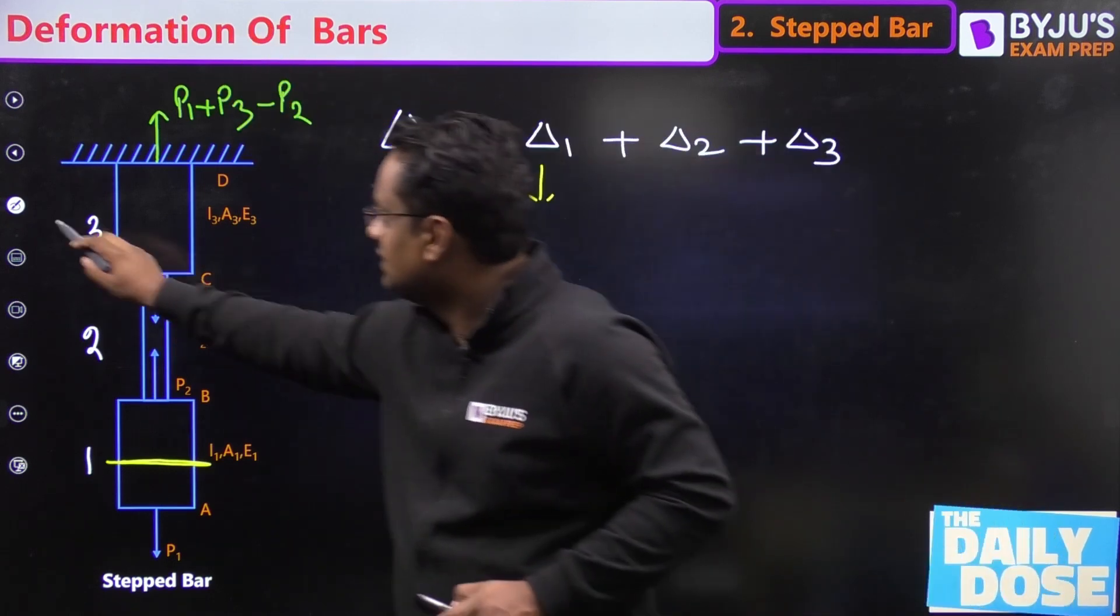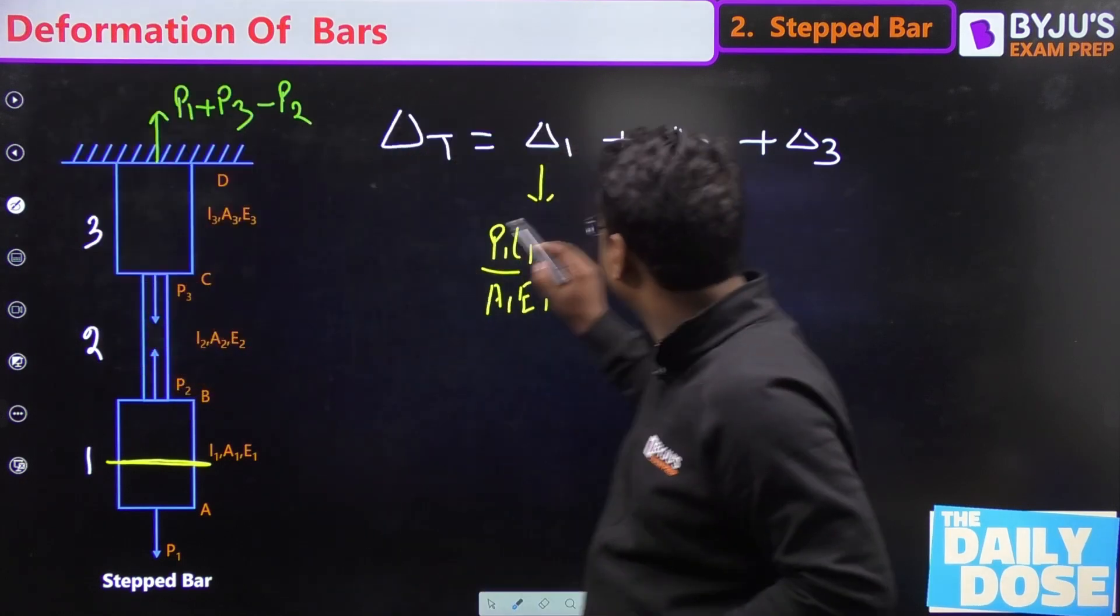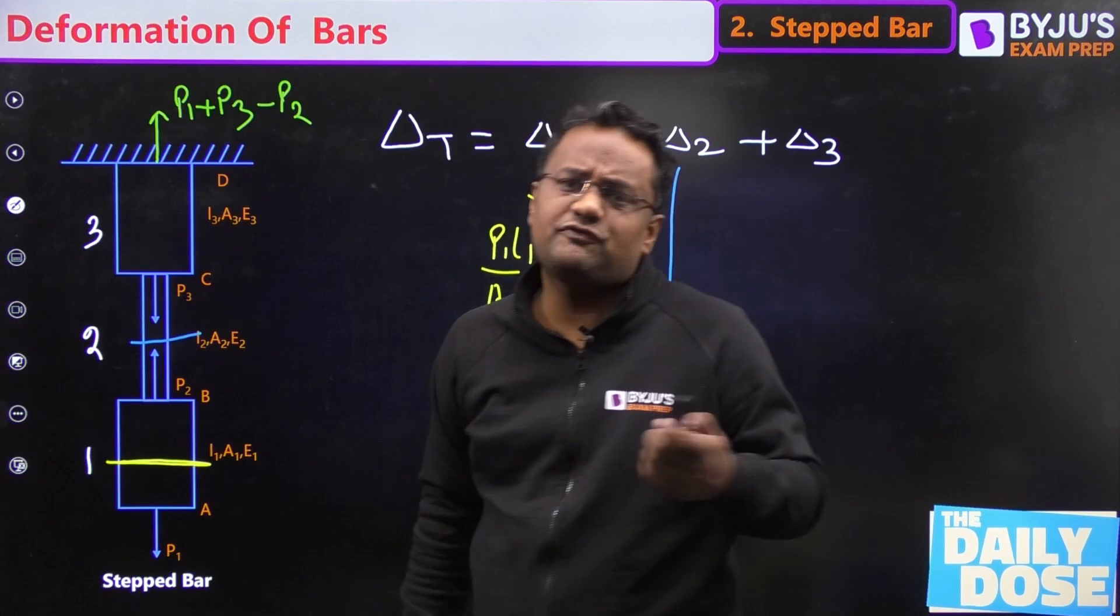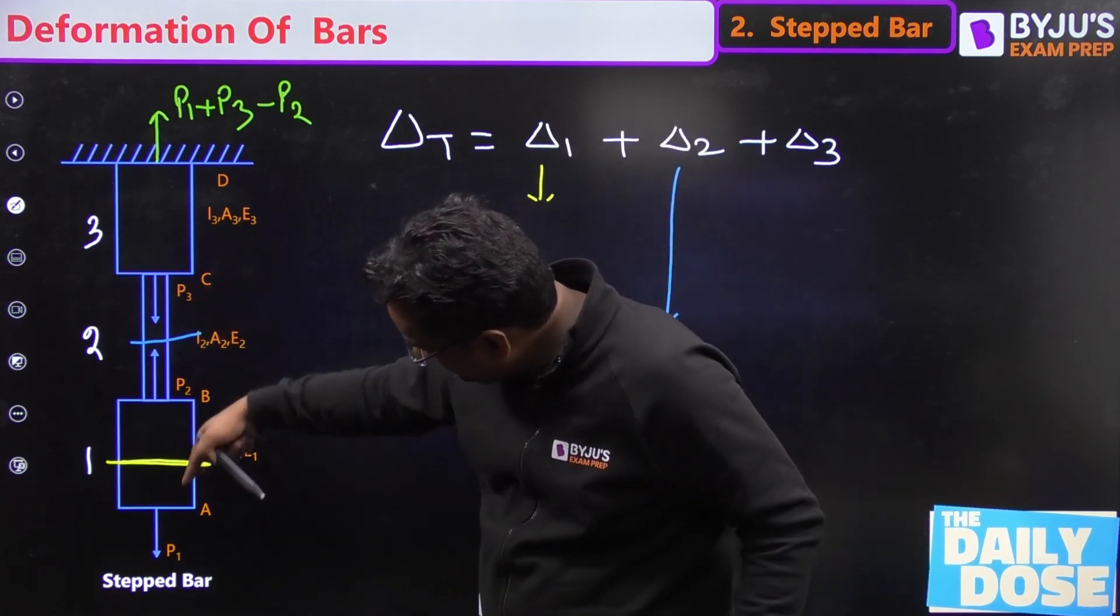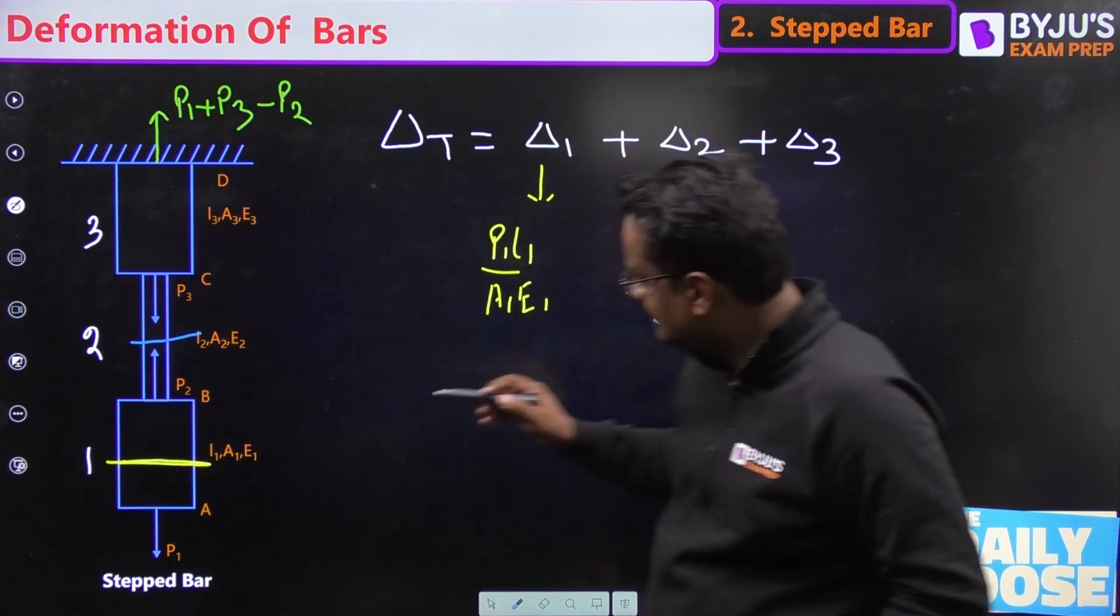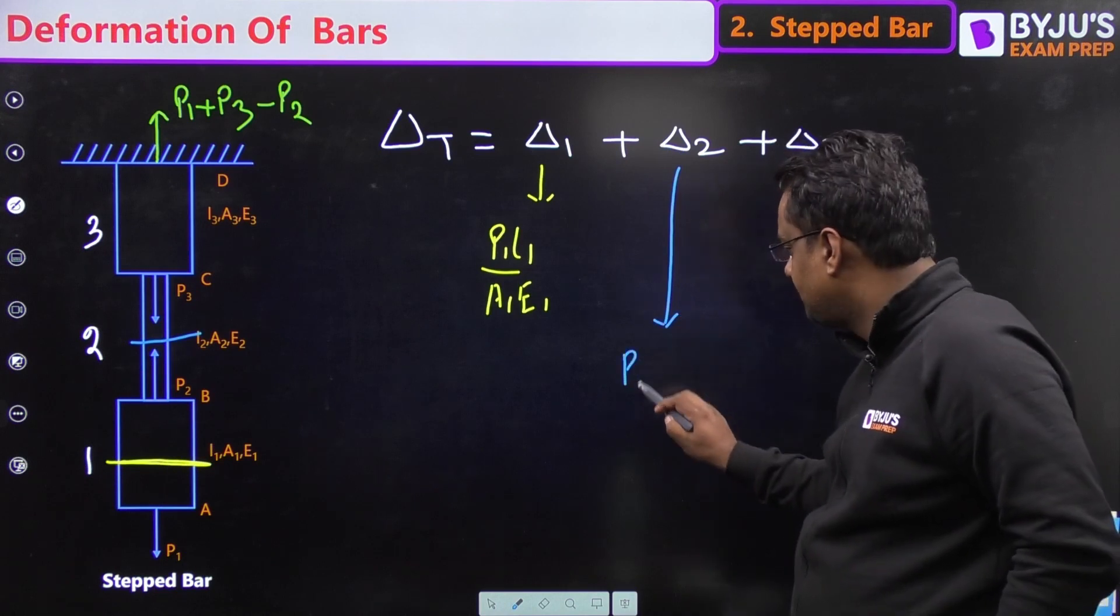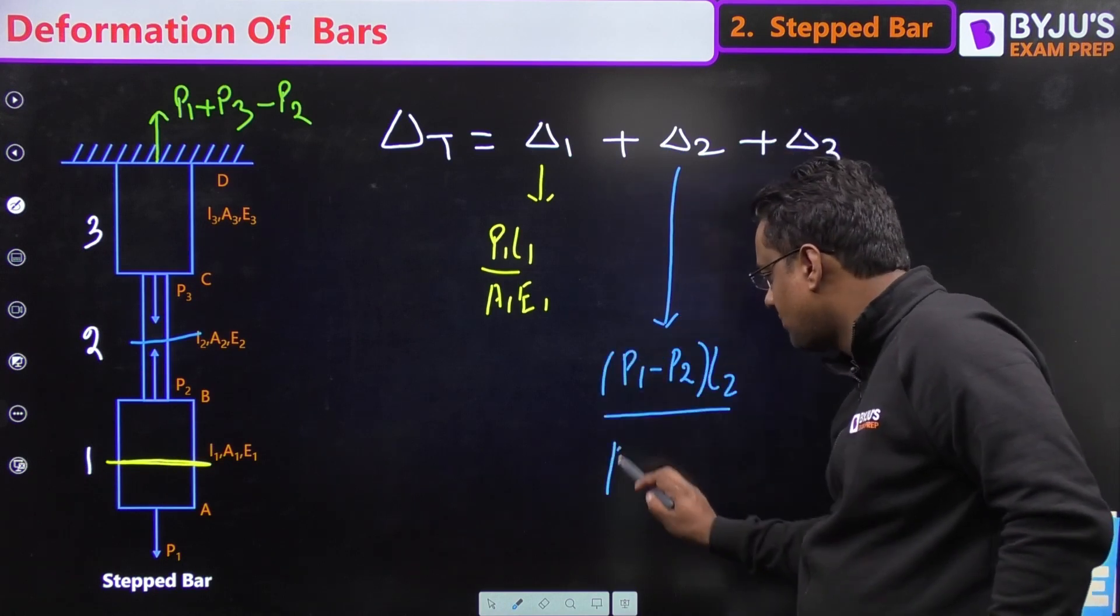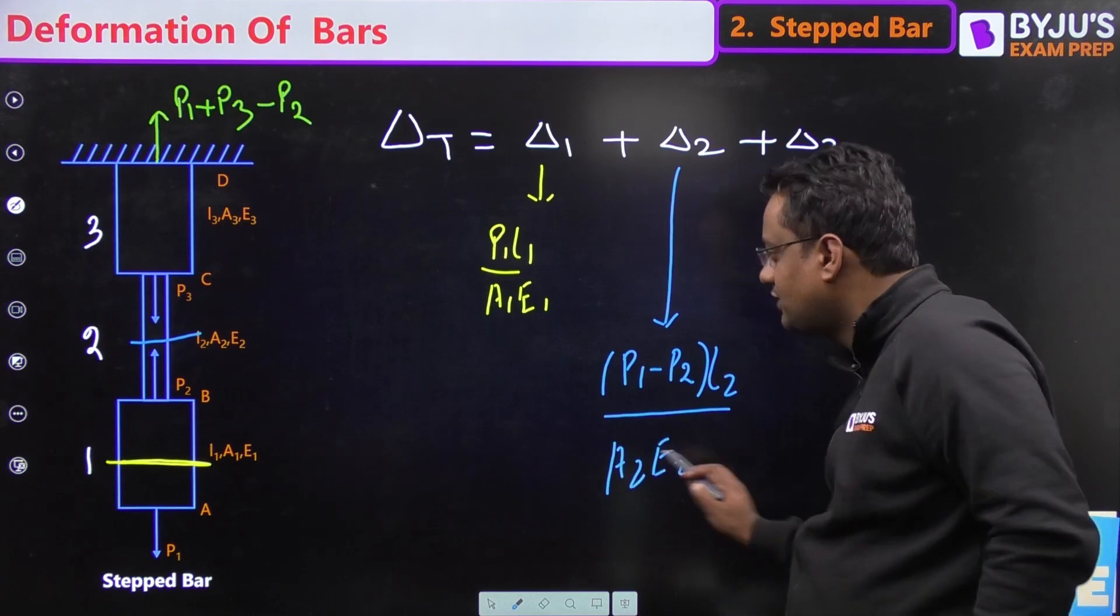Now this will be delta 1. Now going for delta 2, see here delta 2, cut a section in the second. Let us see from bottom. P1 going away, so plus. P2 coming towards it, so minus. So P1 minus P2 into L2 by A2 E2. This formula can be applied because for the whole bar 2, area is constant.